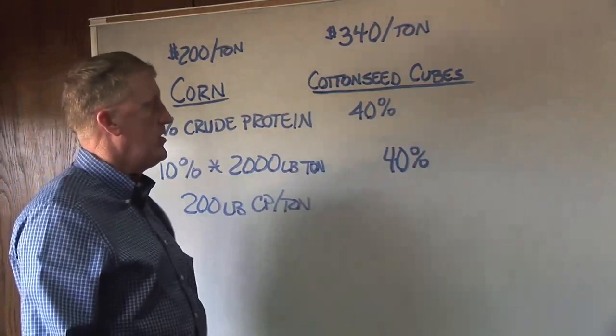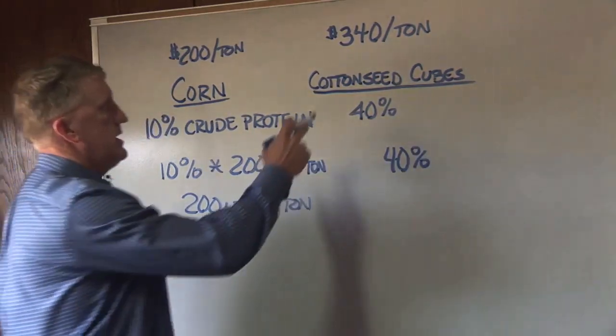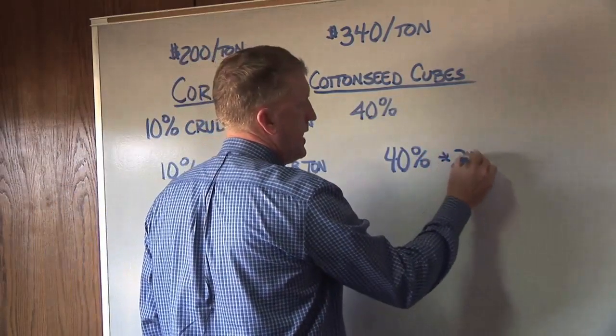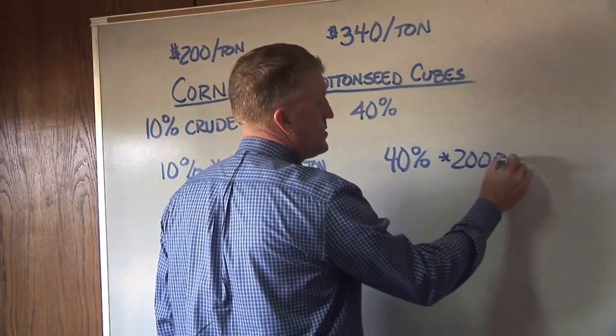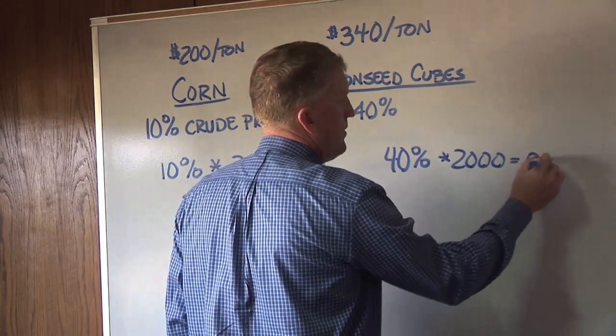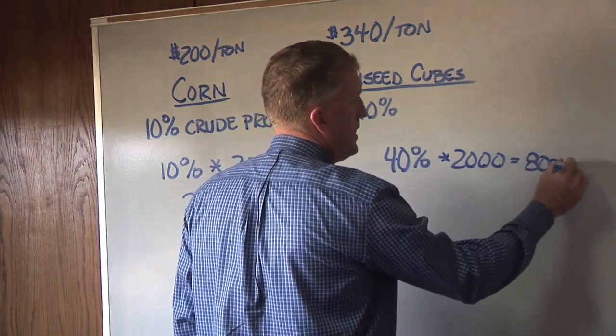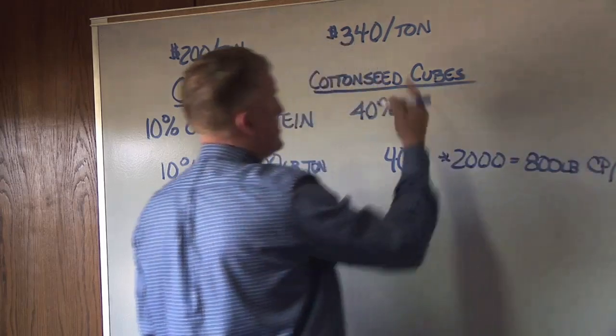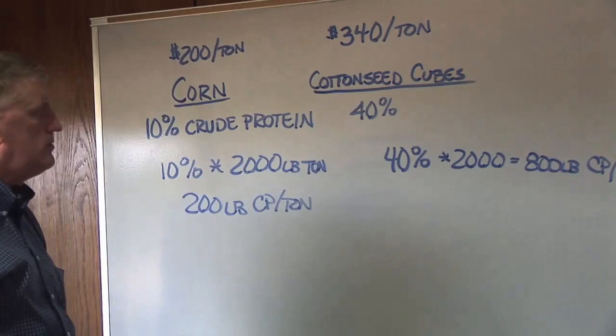To do the same calculations for the cottonseed cubes, we take the 40% crude protein content, multiply that by 2,000 pounds per ton, and we find out that there's 800 pounds of crude protein per ton of these particular 40% protein cottonseed cubes.